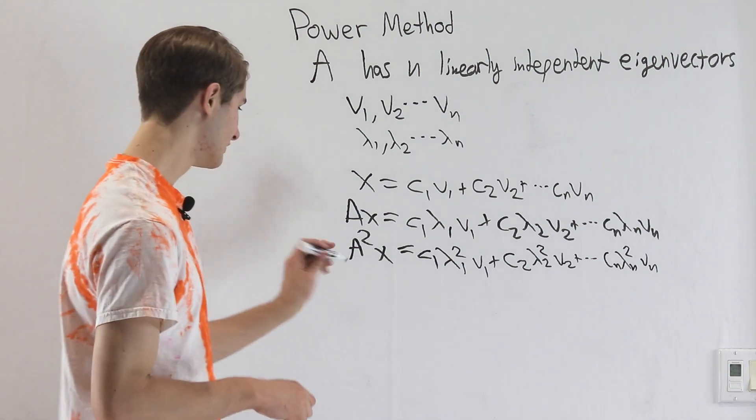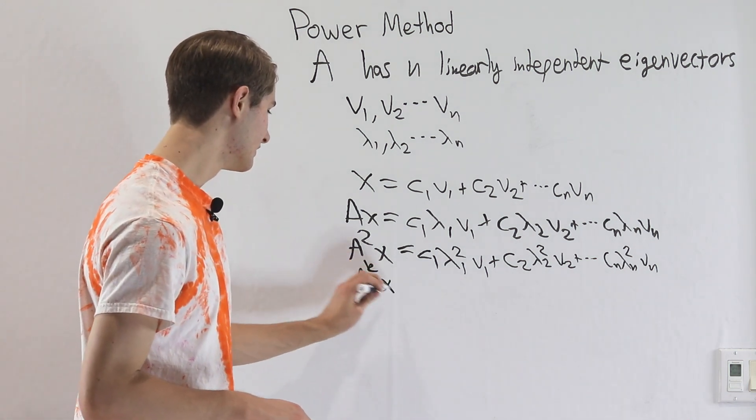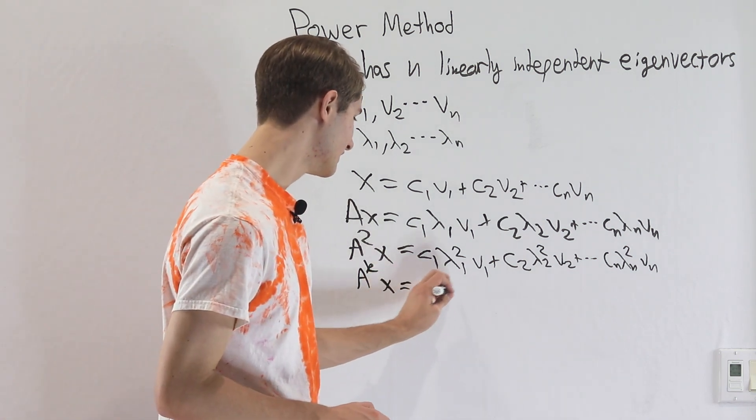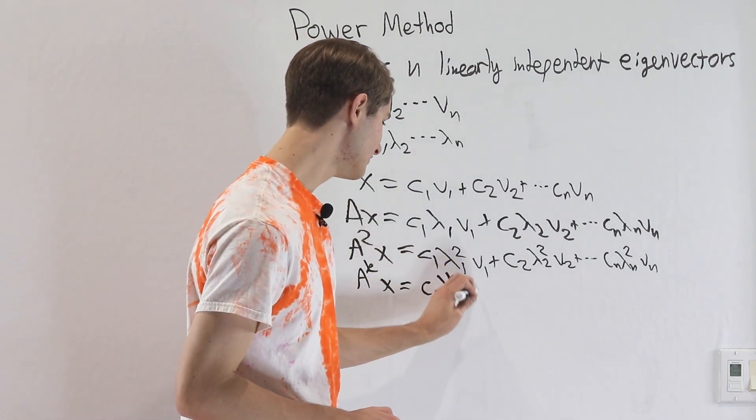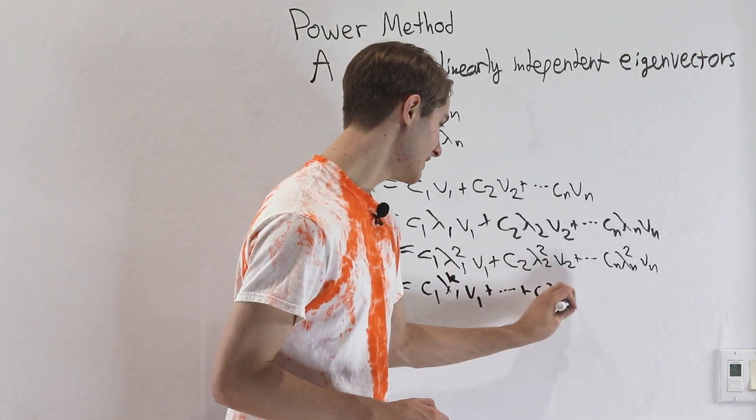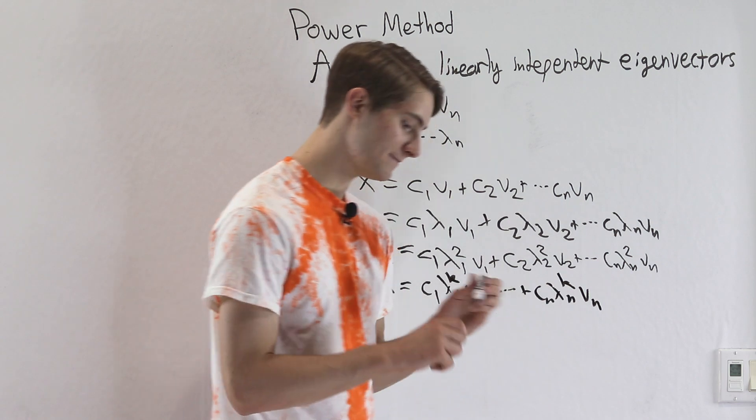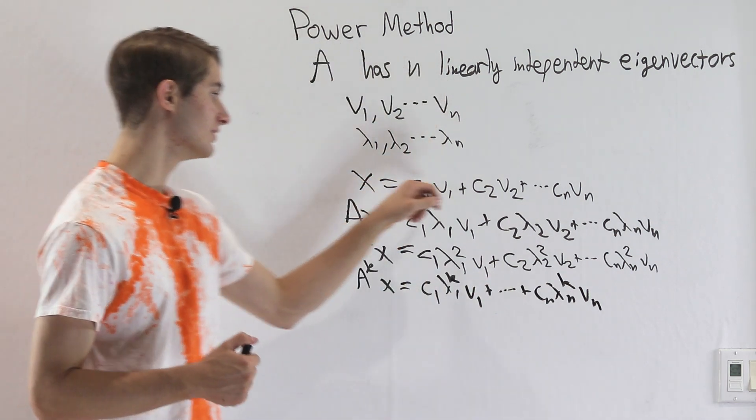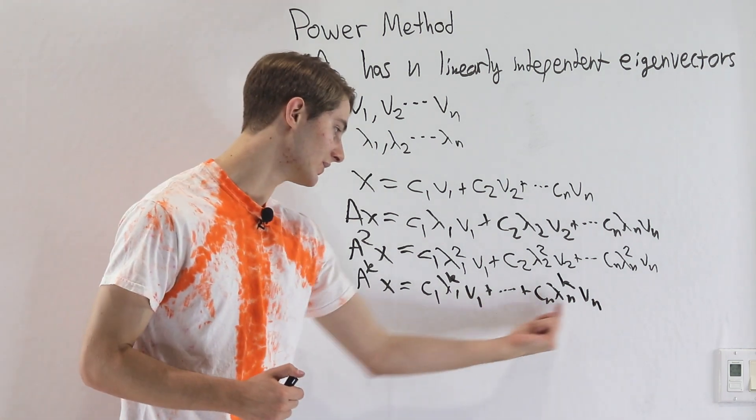And more generally, if we took some power, say to the power of k of the matrix A on both sides, then we would get c1 lambda 1 to the k v1 and so on to cn lambda n to the k vn. And this is because we are able to write any vector as the sum of eigenvectors that gets scaled like this.